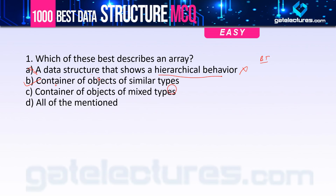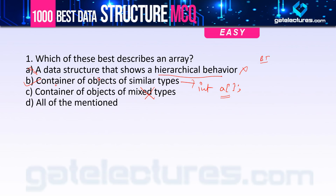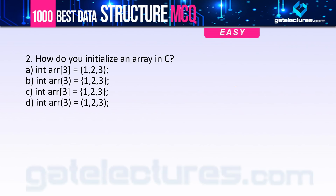Option 3 — container of objects of mixed type — is wrong. For example, an integer array can only contain integer-type elements; it cannot contain characters or floating-point numbers. So the answer to question 1 is option B: container of objects of similar type.